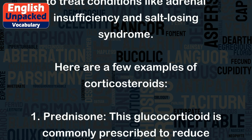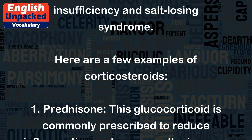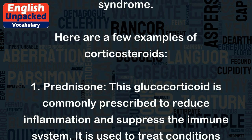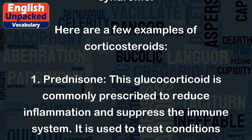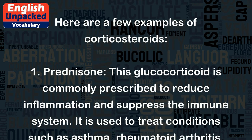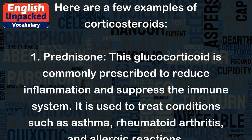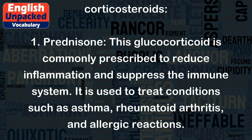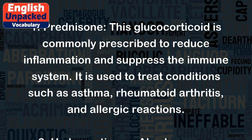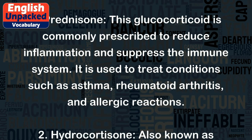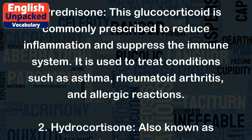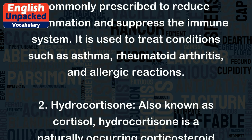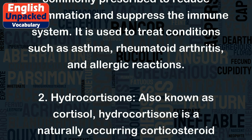Here are a few examples of corticosteroids. 1. Prednisone: This glucocorticoid is commonly prescribed to reduce inflammation and suppress the immune system. It is used to treat conditions such as asthma, rheumatoid arthritis, and allergic reactions.